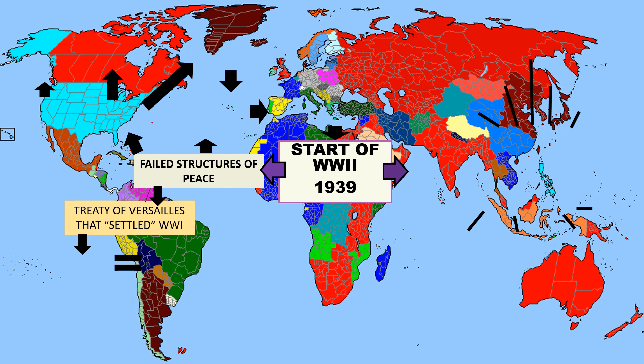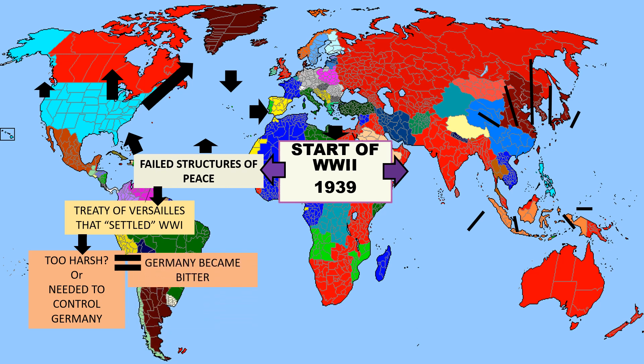The Treaty of Versailles is an agreement amongst allied leaders at the end of World War I that would assign responsibility and blame, and put together the terms and conditions under which everyone would walk away from World War I and keep the peace. Canada sat at the Paris Peace Conference when the Treaty of Versailles was being written up and criticized it for being too harsh on Germany, which took all the blame for World War I. The response was that the harsh conditions were needed to control Germany. But at the start of World War II, it became evident that Germany had become bitter and angry over the terms of the Treaty of Versailles, which, as Canada criticized, was too harsh.